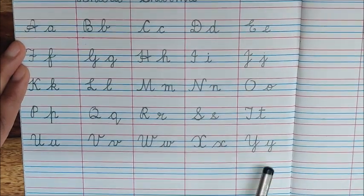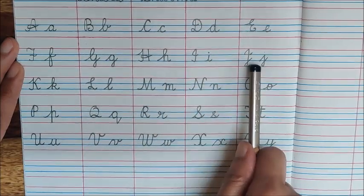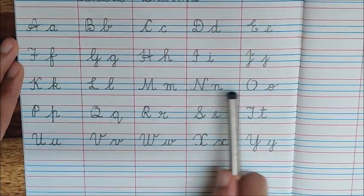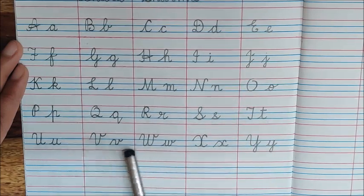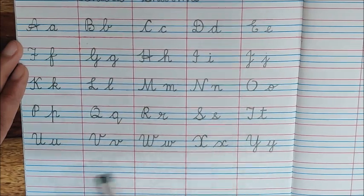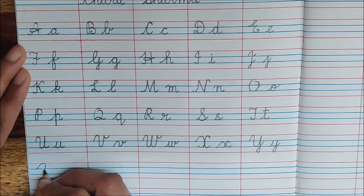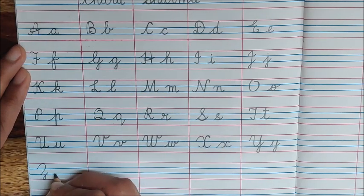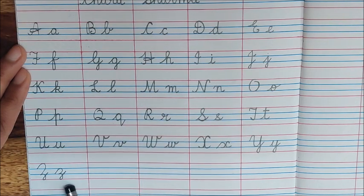And what comes after Y? A, B, C, D, E, F, G, H, I, J, K, L, M, N, O, P, Q, R, S, T, U, V, W, X, Y, Z. So write down here. Z. Capital Z and Z in lowercase cursive. Big friend and small friend.